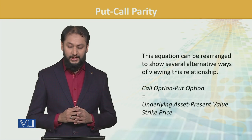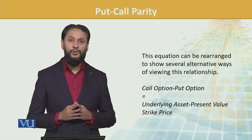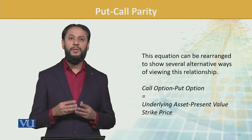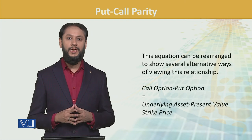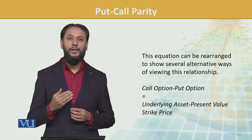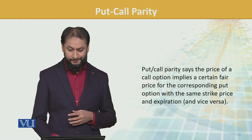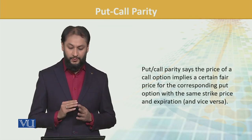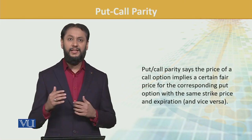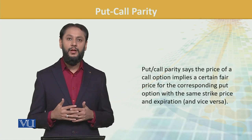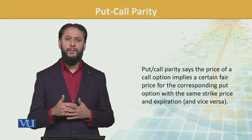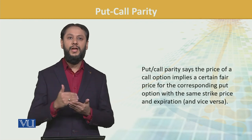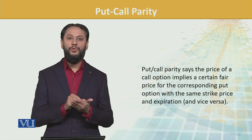Mathematically, if an arbitrage opportunity exists, the equation can be rearranged: the call option equals the underlying asset plus the present value of the strike price. You can expect these in MCQs — one part could be the missing value. Put-call parity says the price of a call option implies a certain fair price for the corresponding put option with the same strike price.